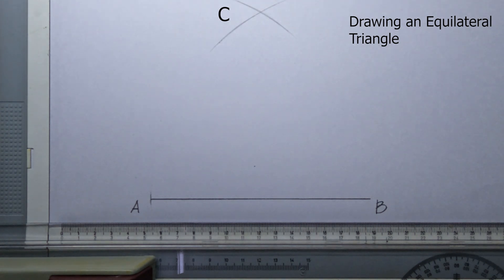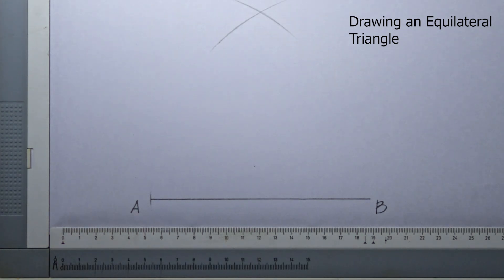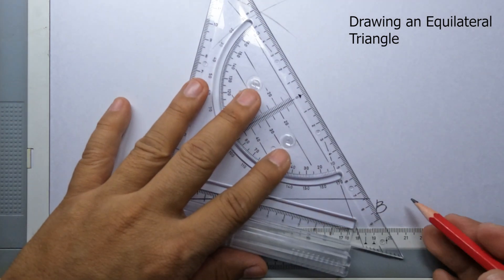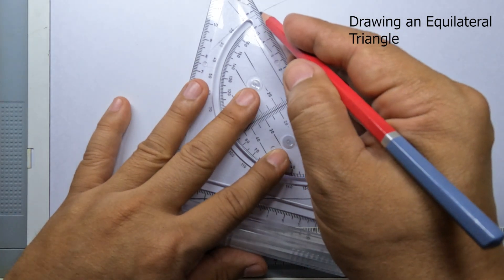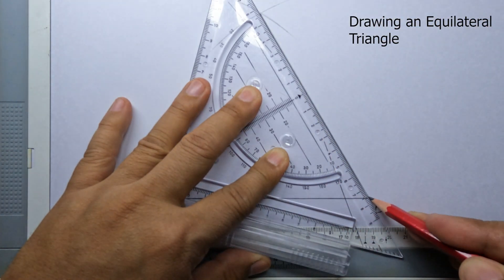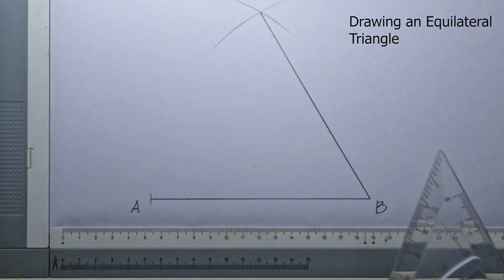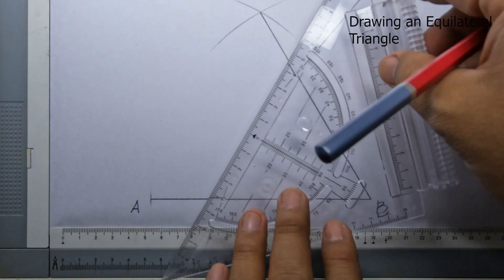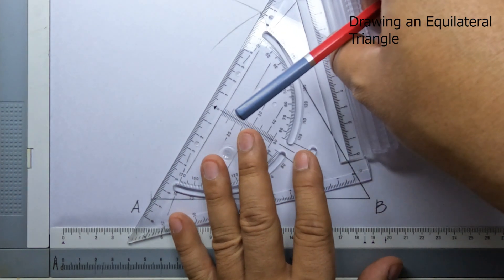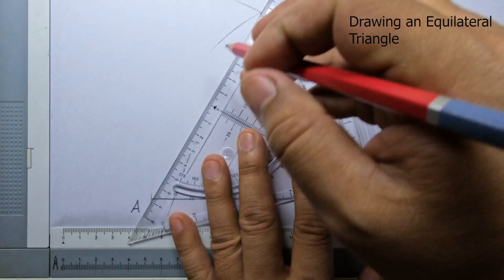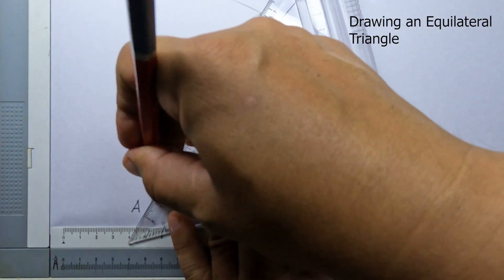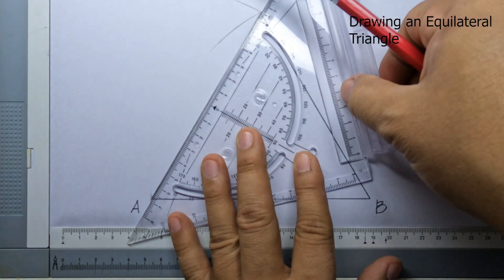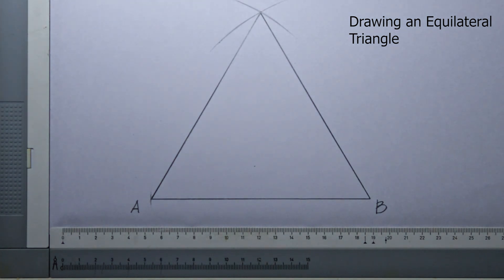Label the point where the arcs intersect as point C. Complete the triangle by using the straight edge to draw lines from point C to point A and from point C to point B. This completes the equilateral triangle. All sides are equal and all angles are 60 degrees.